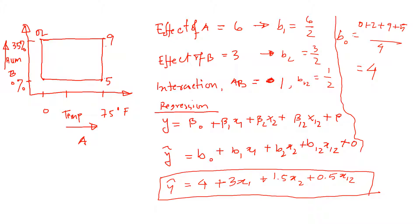So the estimate we calculate, the estimated effect is basically one half of the effect of A. So B1 is basically 6 by 2, and then B2 is basically 3 by 2, and the effect of AB, B12, is 1 by 2.